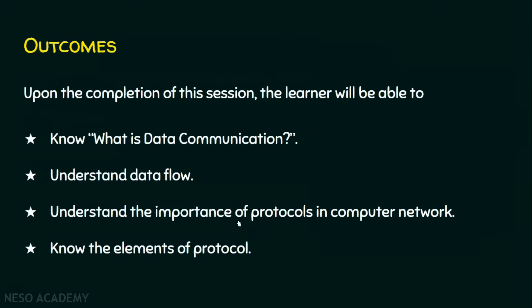And that's it guys. Now we shall just recapture what we have seen today. We have seen what is data communication — the exchange of data between nodes. We have seen what is data flow, and the three data flows: simplex, half duplex, and full duplex. We have also seen the role of protocols in computer networks, and even in real time, protocols have a very important role to play. And we have seen what are the five elements of protocols: message encoding, message formatting and encapsulation, message size, message timing, and finally the delivery options. I hope the session is informative. Thank you all.